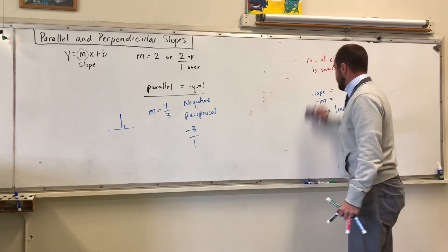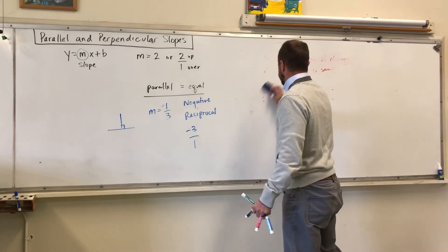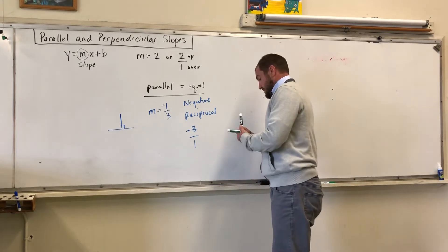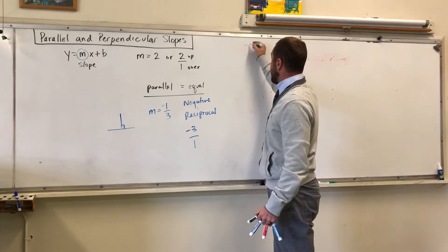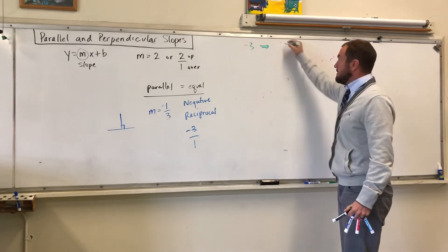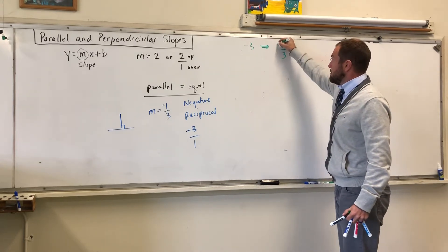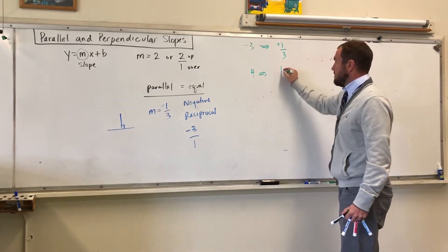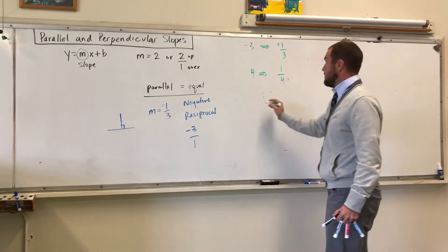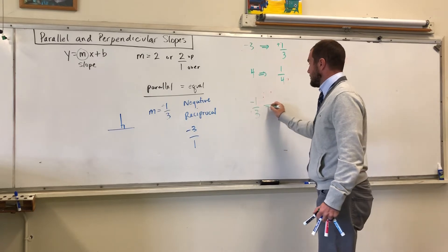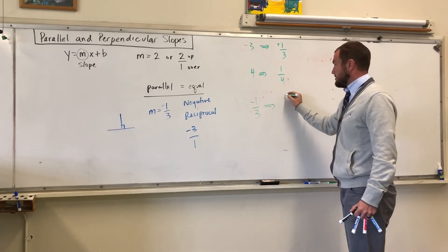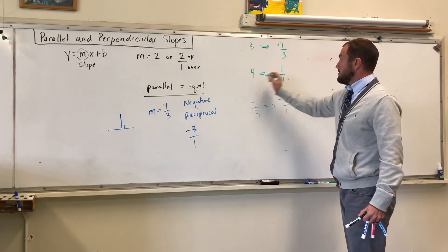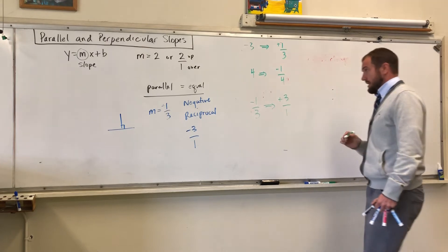Let's say you have negative 3. The perpendicular slope to that is positive 1 over 3. Let's say you have a 4 — the perpendicular slope to that would be negative 1 over 4. Let's say you have negative 1 third — the perpendicular slope to that is positive 3 over 1.